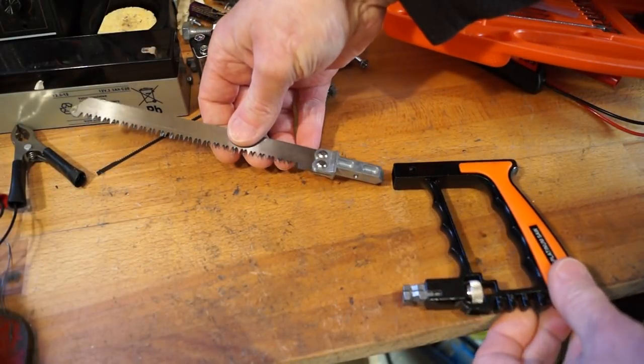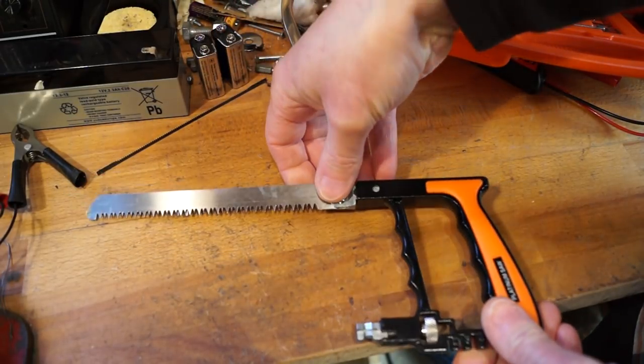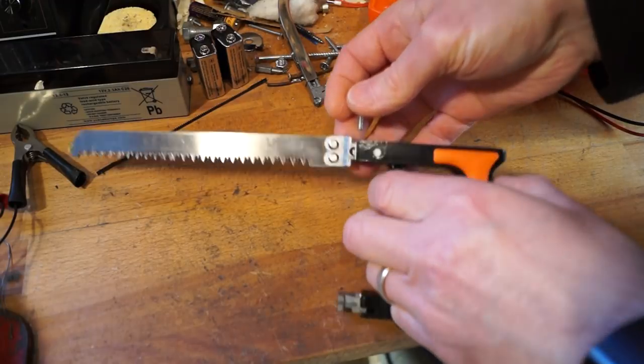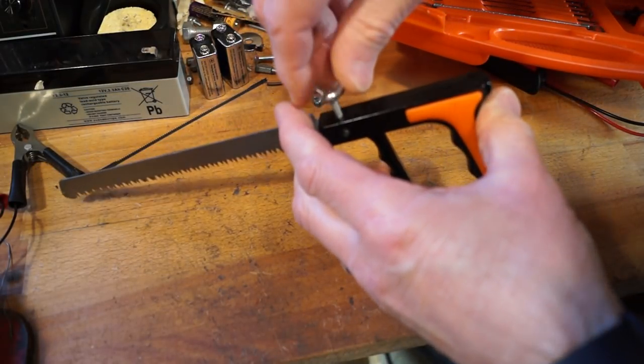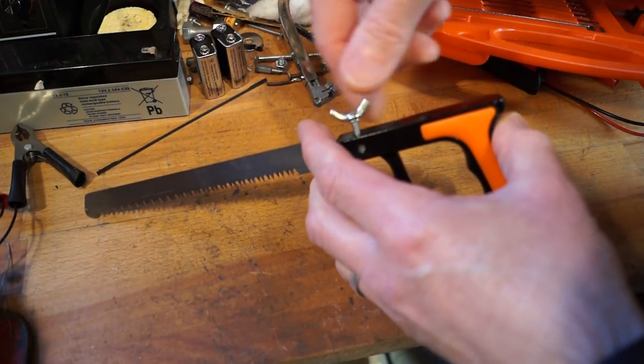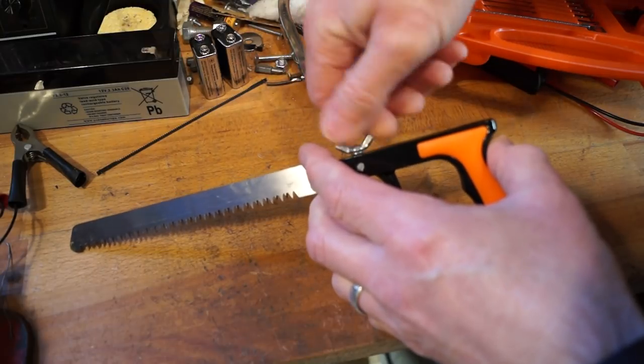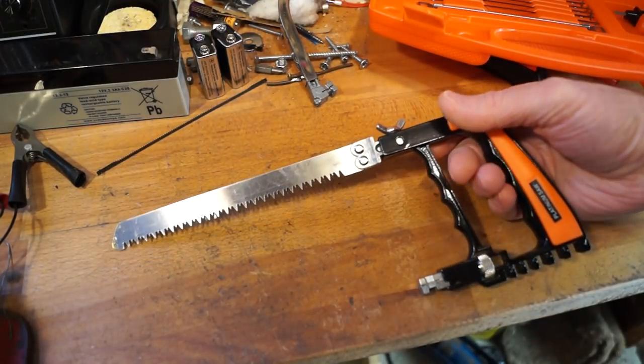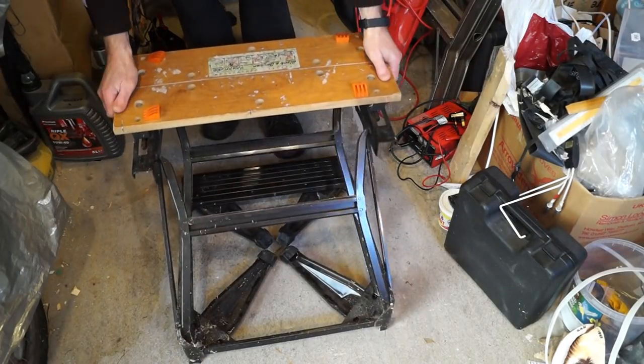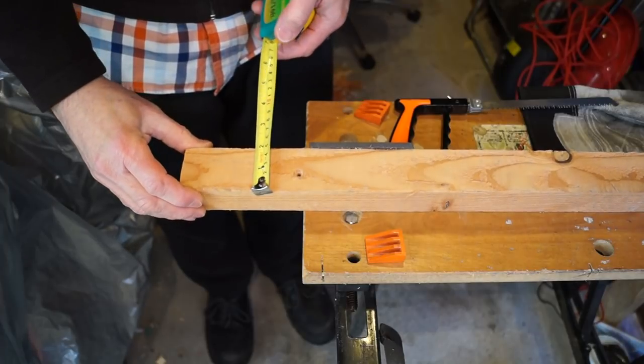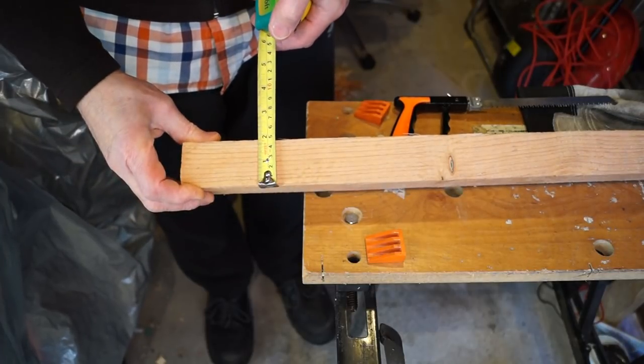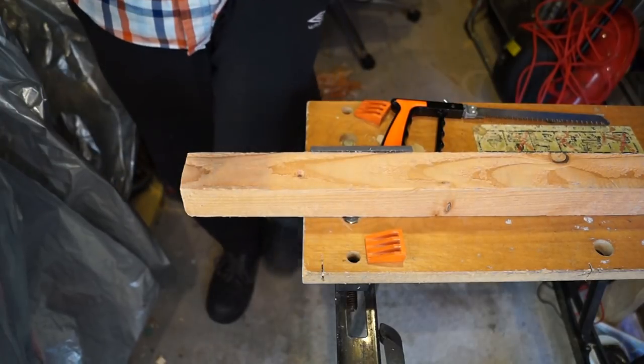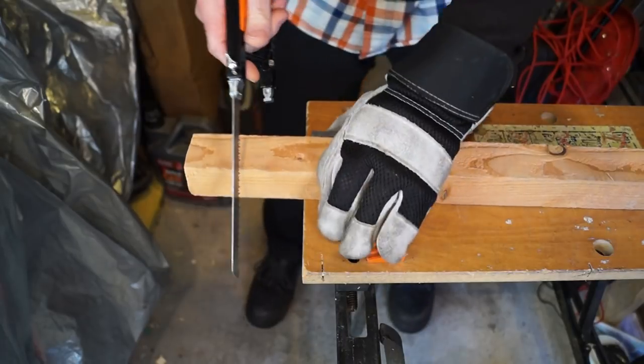This blade is apparently inserted into the handle like so, and we have this little wing nut just here which apparently we screw in the top like so to lock him in place. And then apparently we have a wood saw here. So what I'll do is I'll get my workbench made up and we'll have a look.